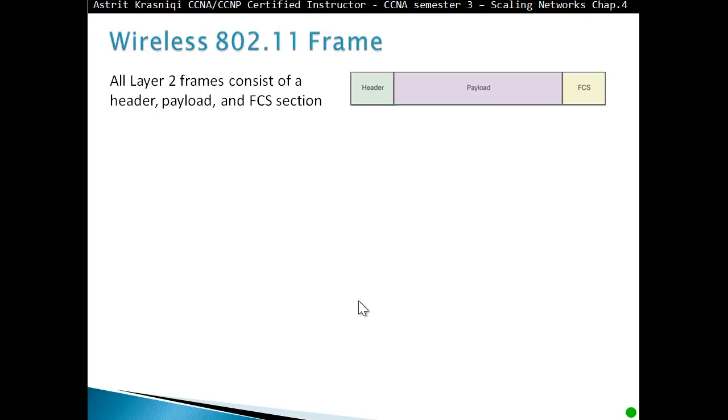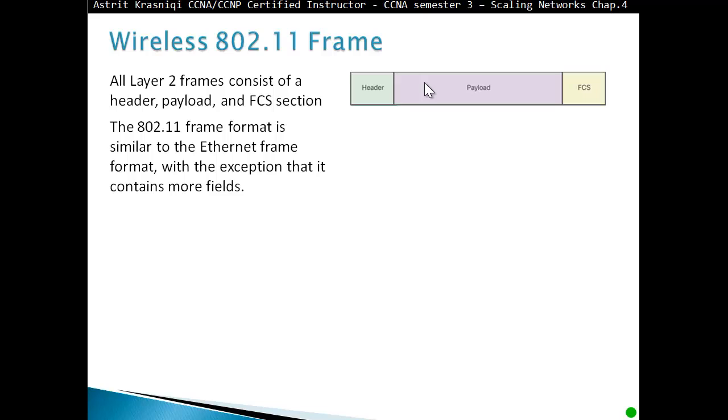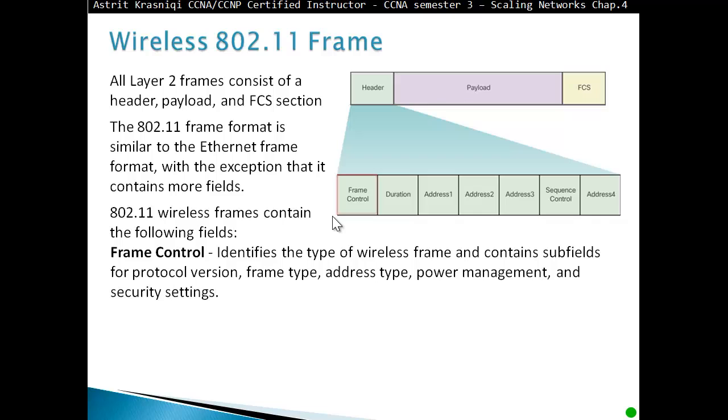All layer 2 frames consist of the header, payload, and frame check sequence sections. The 802.11 frame format is similar to Ethernet frame format with the exception that it contains a lot more fields.